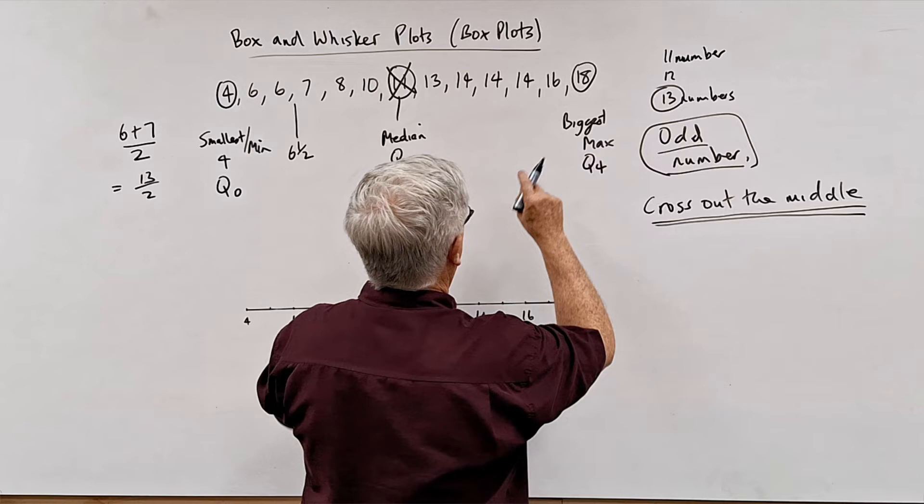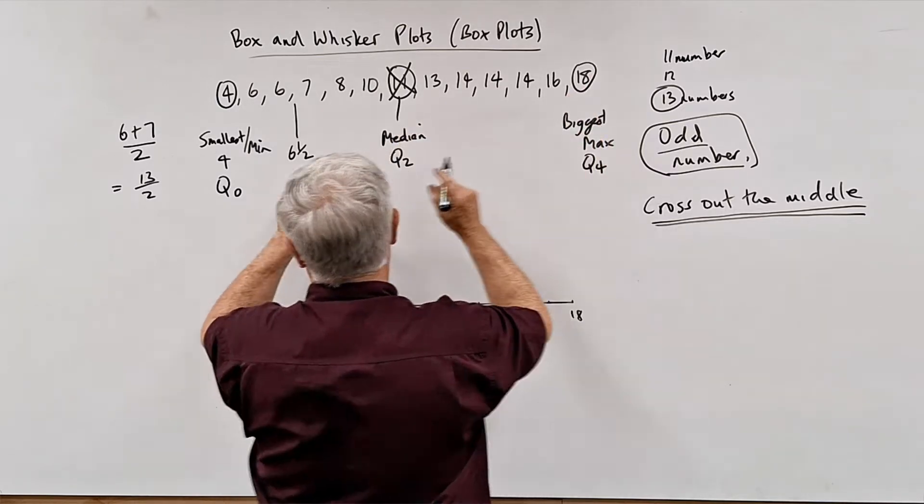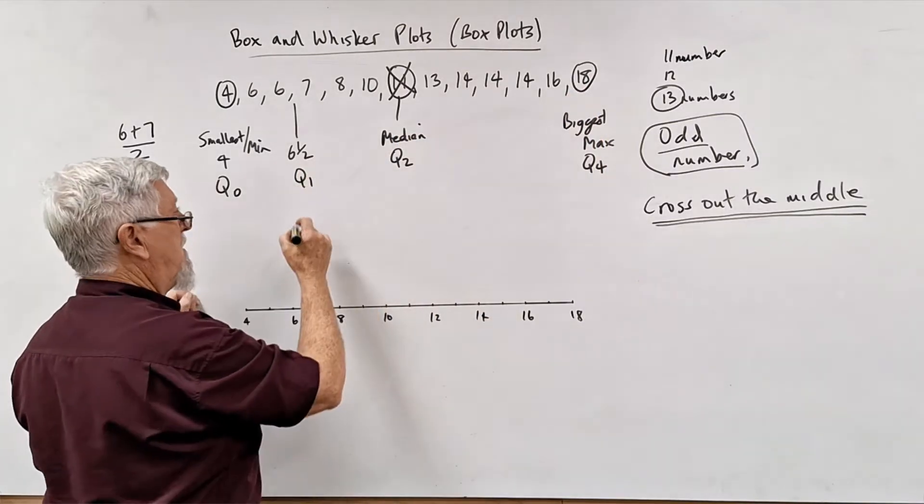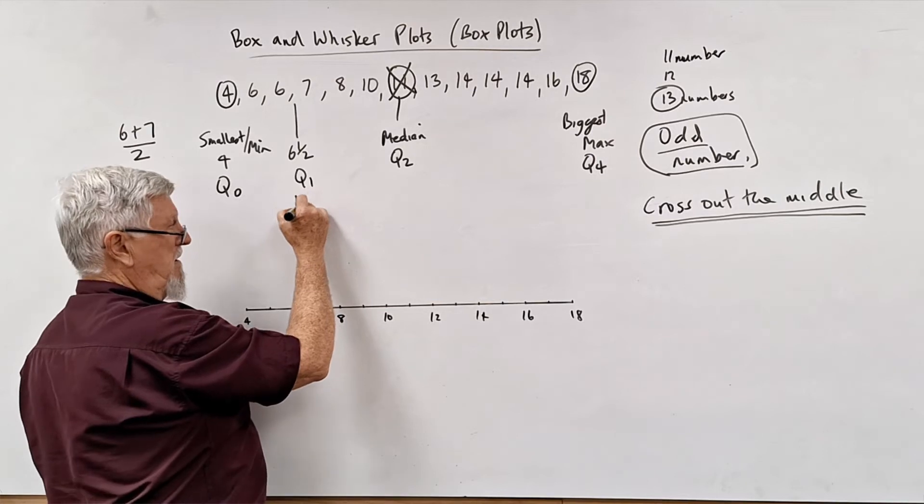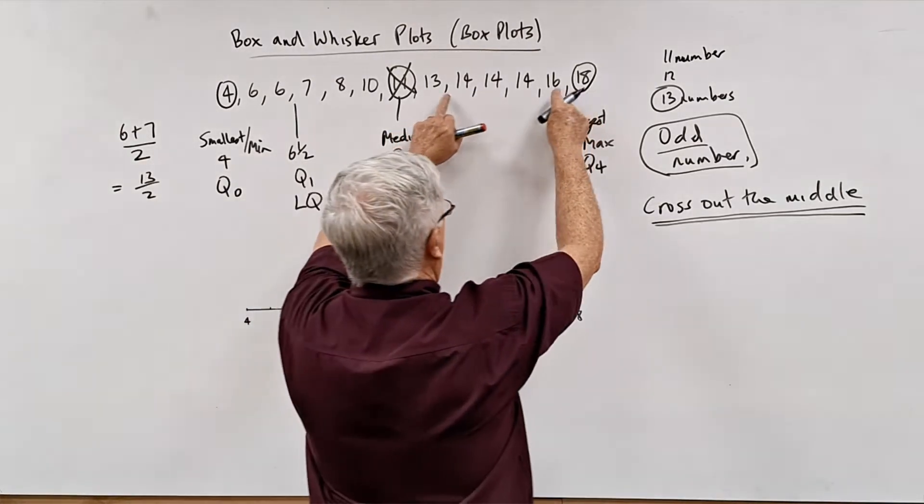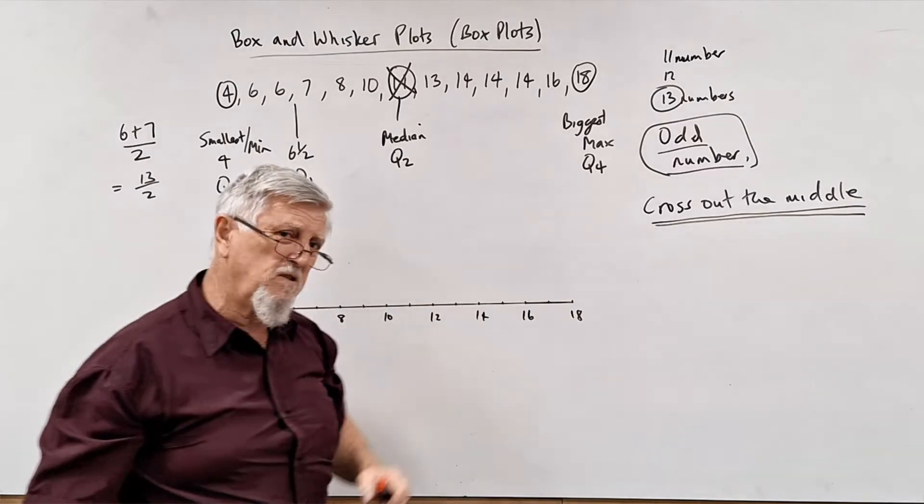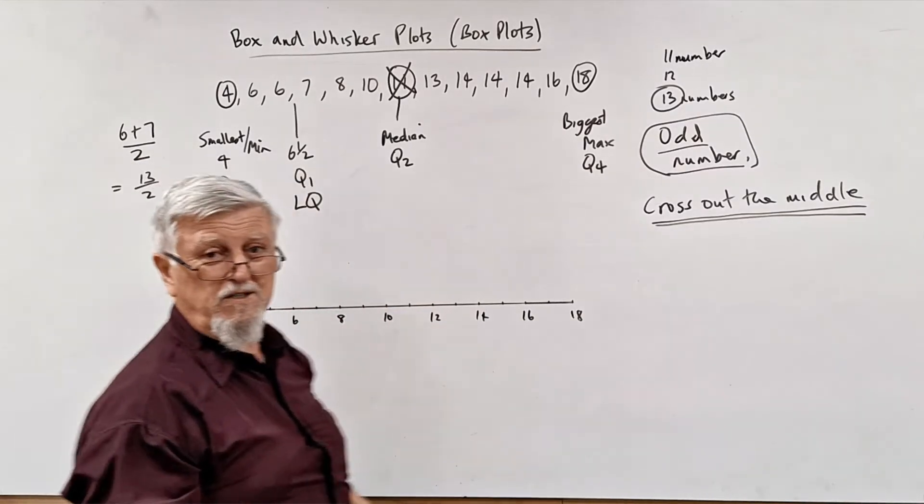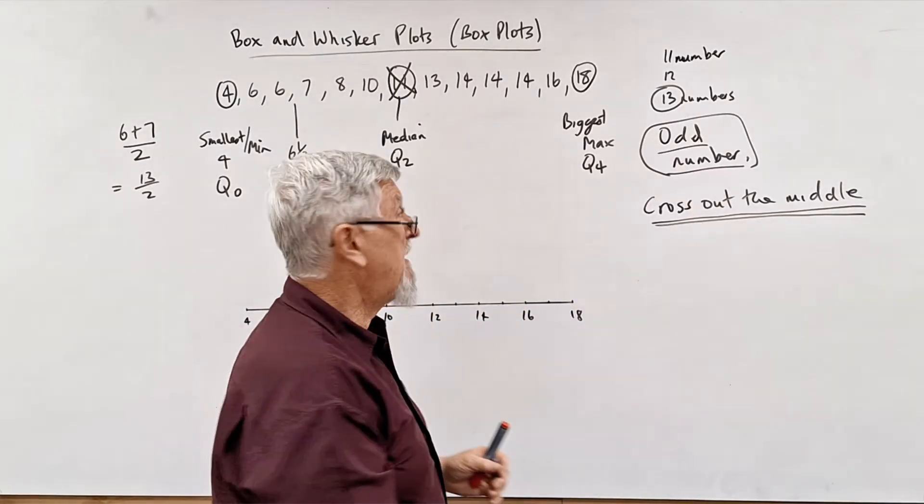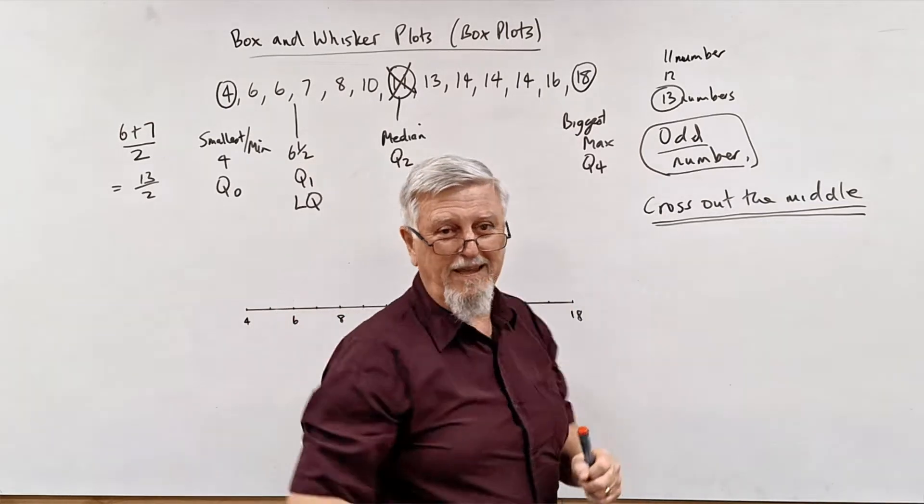Now here's something that often mucks students up. The top half, that by the way is Q1, which a lot of people call the lower quartile. So there's six, one, two, three. There's two 14s. And students get really mixed up with two 14s and they say, is it seven? No.